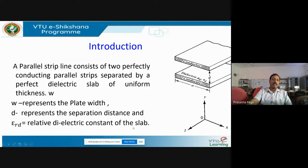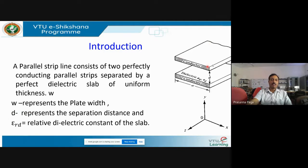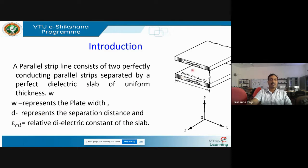A parallel strip line is basically a bi-directional microstrip line — you have one microstrip line on top and another at the bottom. It is composed of two perfectly conducting parallel strips separated by a dielectric slab of uniform thickness. Here w represents the plate width, d represents the distance of separation between the two plates, and epsilon_rd represents the relative dielectric constant of the slab.